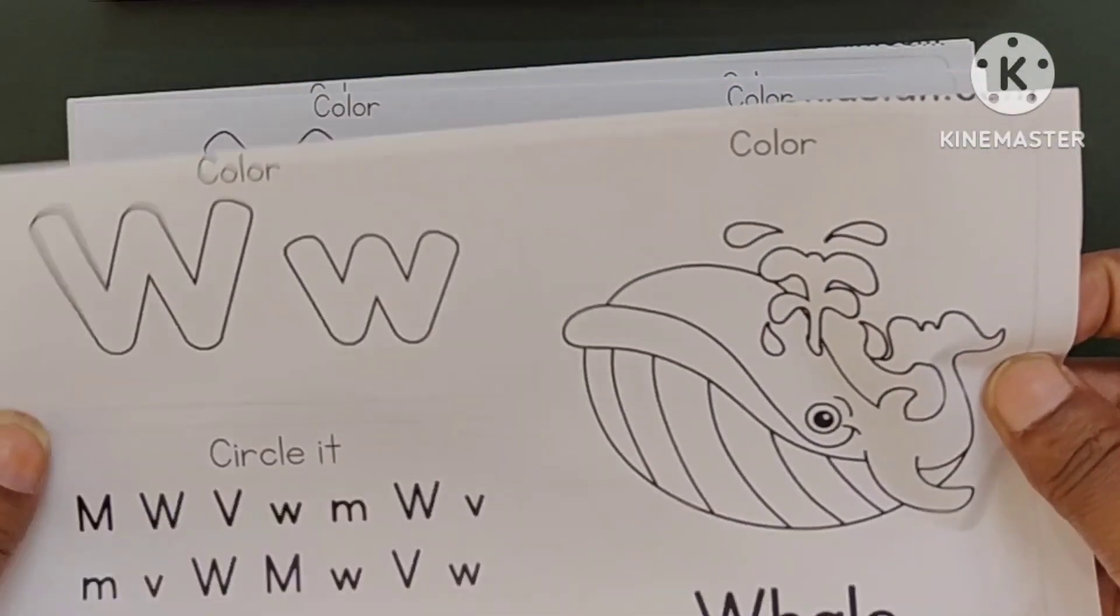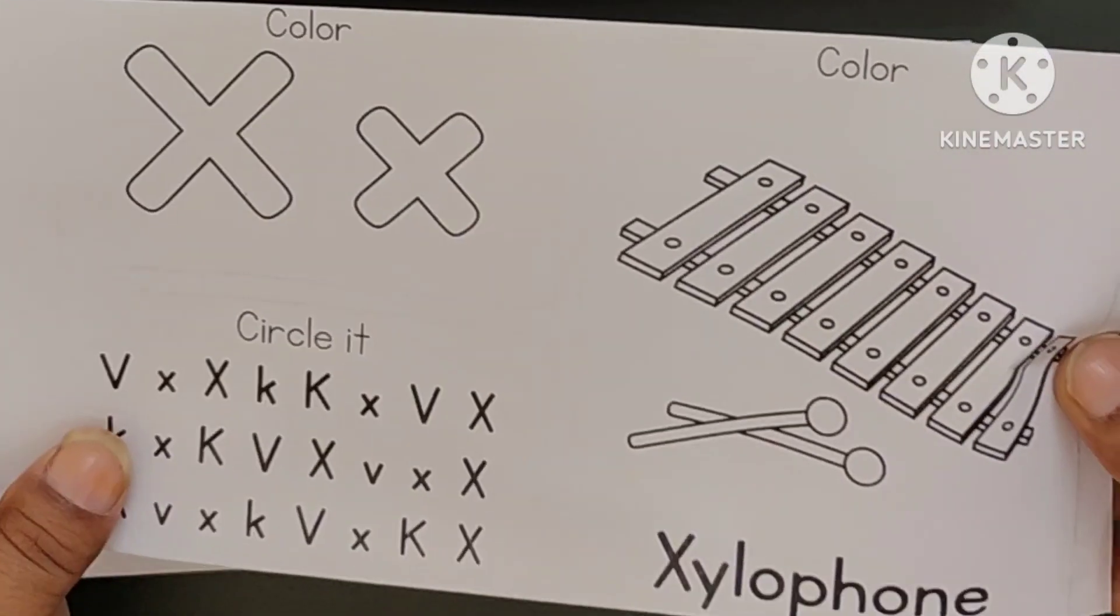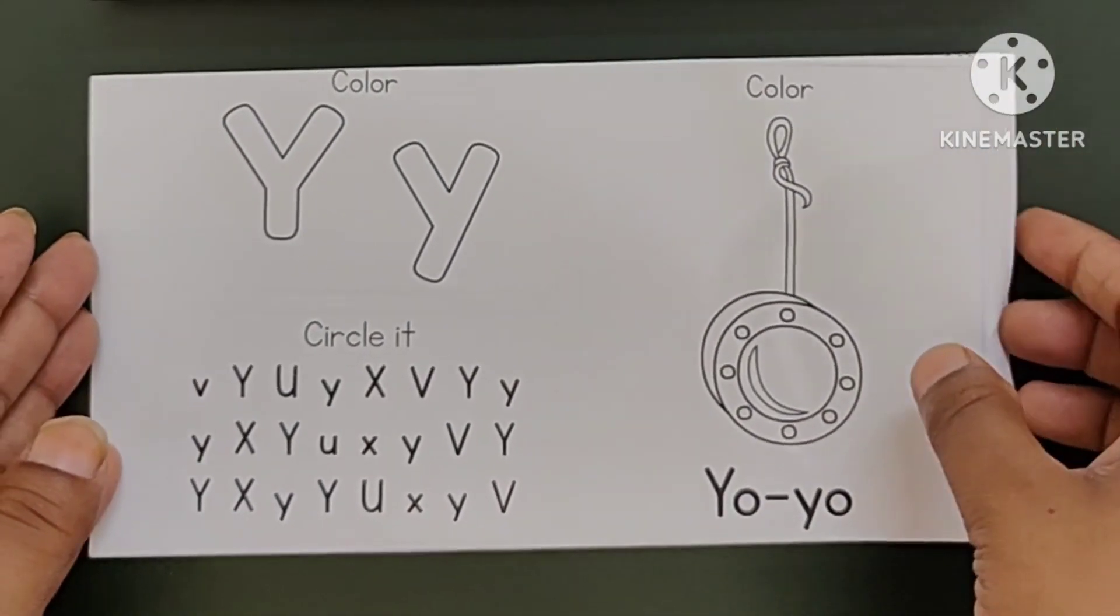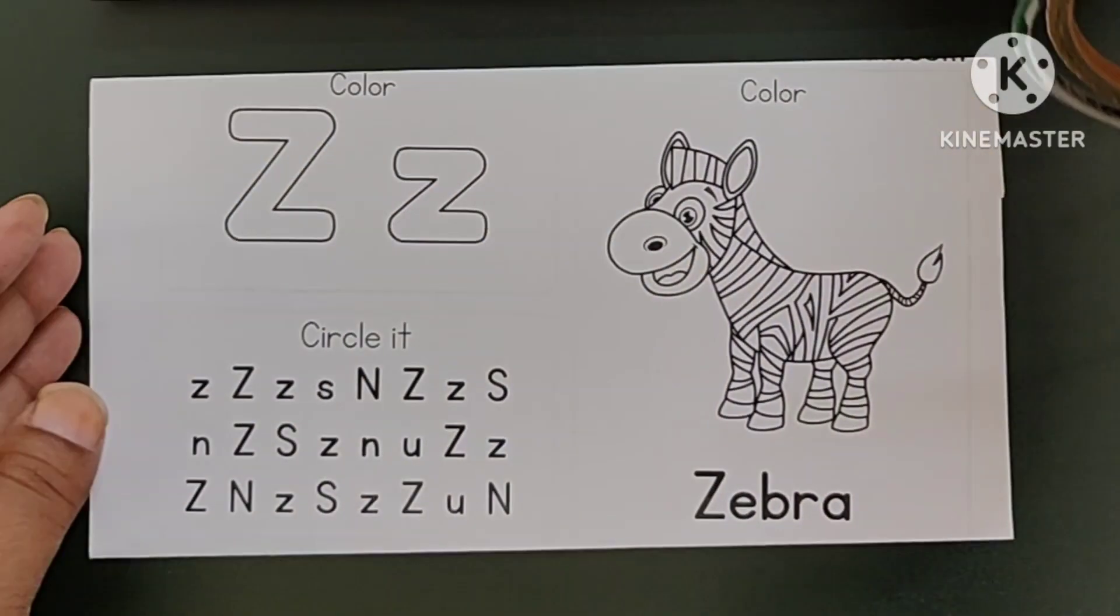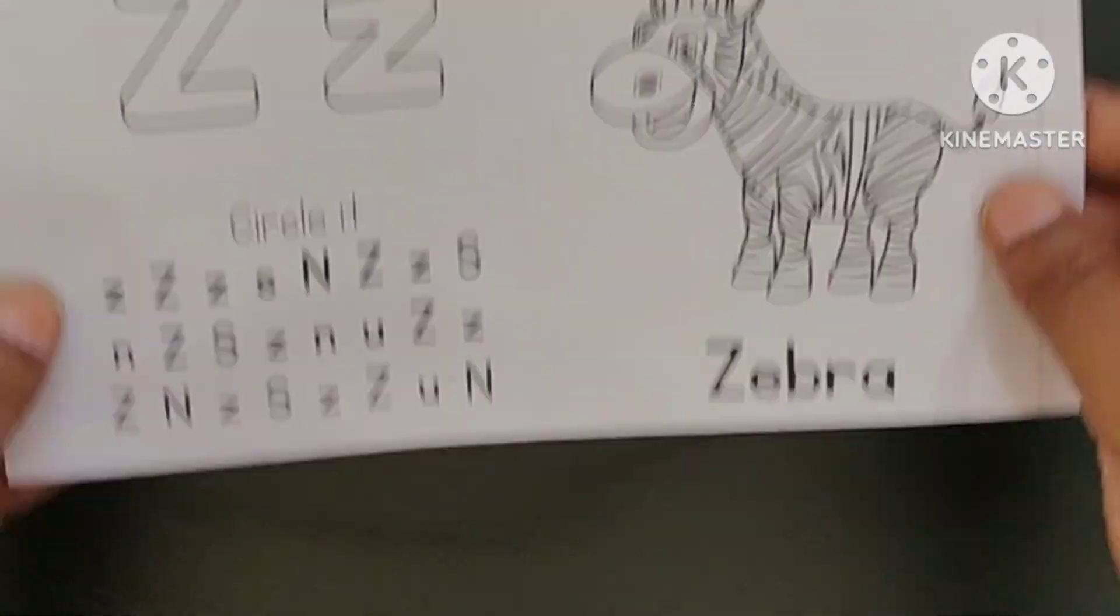W. W for Way X. X for Xylophone Y. Y for Yo-Yo Z. Z for Zebra. Thank you.